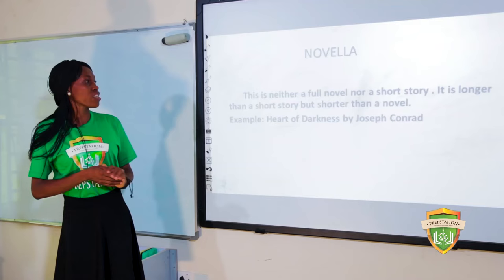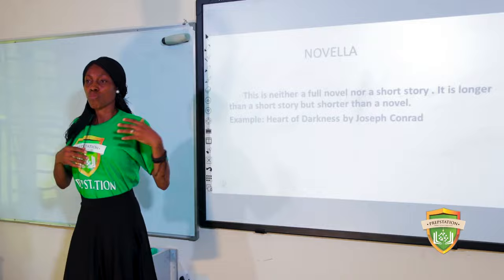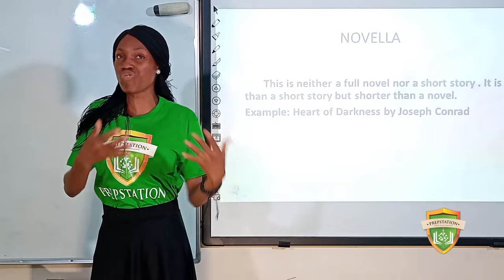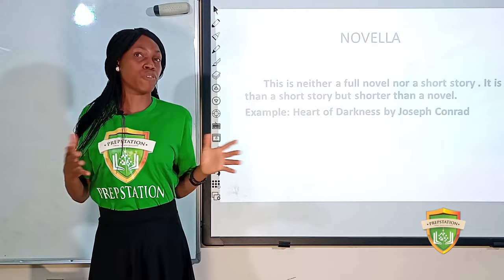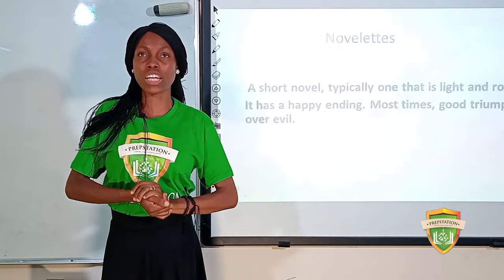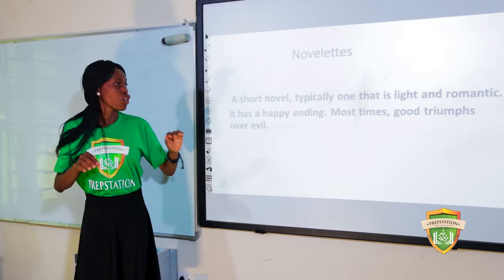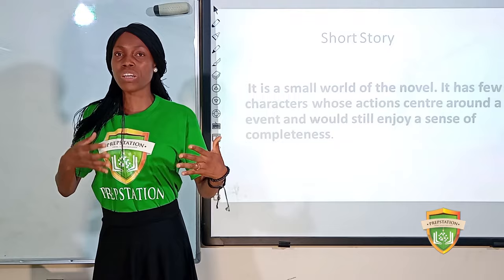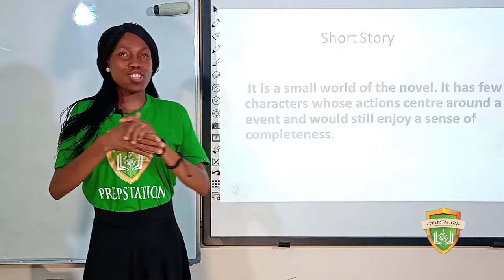A novella is neither a full novel nor a short story — it is longer than a short story but shorter than a novel. A typical example is The Heart of Darkness by Joseph Conrad. A novelette is a short novel, typically light and romantic, with a happy ending where good triumphs over evil. Examples include Cinderella, Ali Baba and the Forty Thieves, Sleeping Beauty, and Snow White and the Seven Dwarfs.